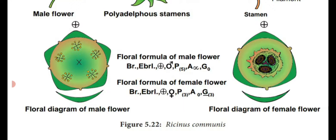Male flower formula: Br (bract at base), Ebrl (bracteole absent), actinomorphic, male symbol, P5 (perianth 5, united — within bracket), A∞ (androecium many — infinity, not countable), G0 (gynoecium absent — zero).